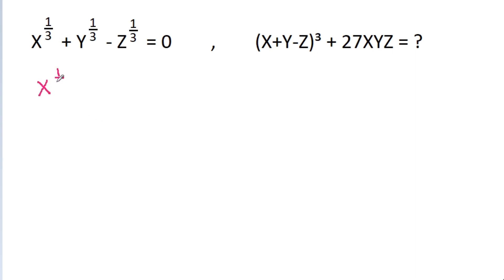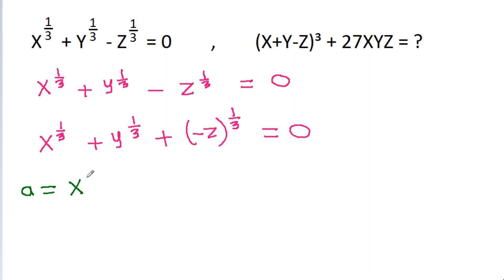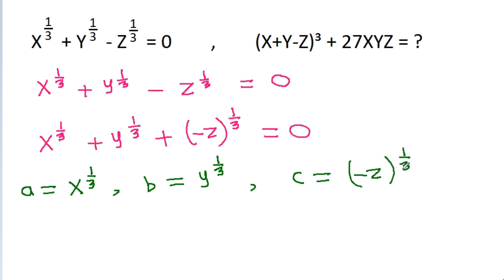So we have x power 1 by 3 plus y power 1 by 3 minus z power 1 by 3 is equal to 0. We can write this as x power 1 by 3 plus y power 1 by 3 plus minus z power 1 by 3 equals 0. If we take a equal to x power 1 by 3, b equal to y power 1 by 3, and c equal to minus z power 1 by 3, then we get a plus b plus c is equal to 0.